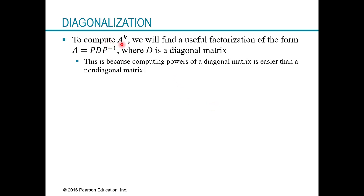To compute A to the K — meaning you have a matrix and you want to raise it to a power — we're going to find a useful factorization of the form A equals P times D times P inverse, where D is a diagonal matrix. We can rewrite A in terms of D, left-multiplied by P and right-multiplied by P inverse. We do this because computing powers of a diagonal matrix is actually a lot easier than doing that for a non-diagonal matrix.